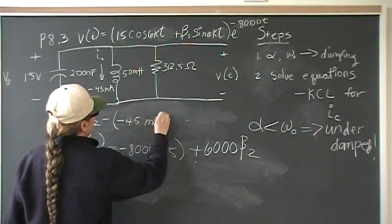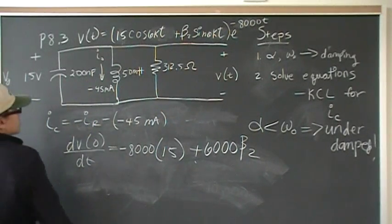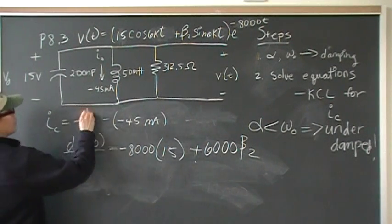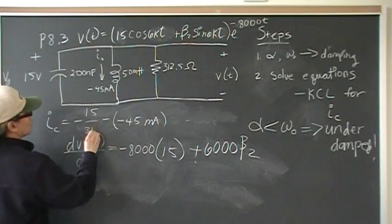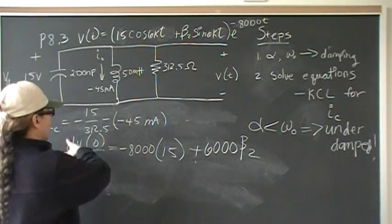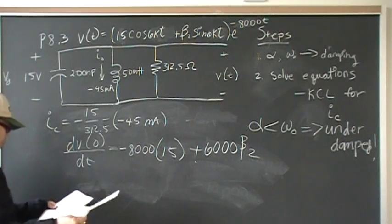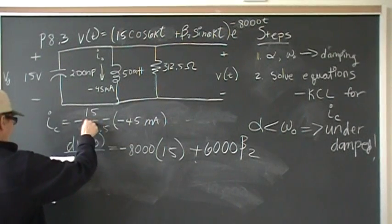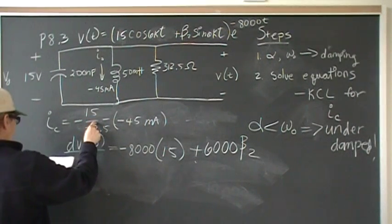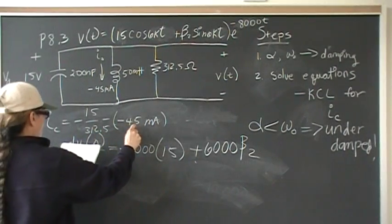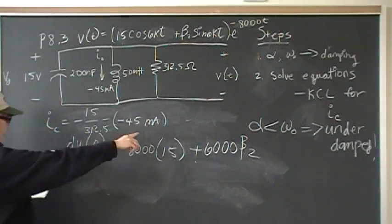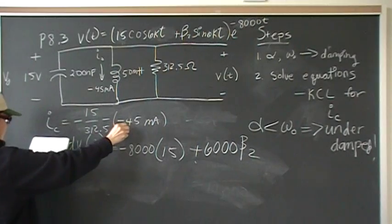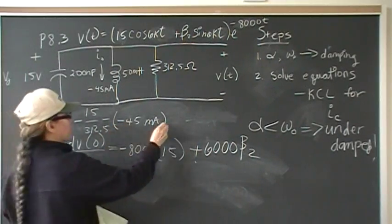It's just a lot easier with all the information that they gave us. This is just V over R, right? 15 over 312.5. So, when you do that calculation, you end up with, this is actually 48 milliamps. That's what you should come up with when you put that in the calculator. And, of course, this is negative, you're subtracting negative 45 milliamps. So, it's negative 15 over 312.5, or negative 48, plus 45, you should come up with negative 3 milliamps.